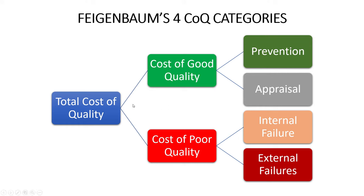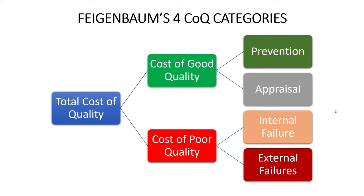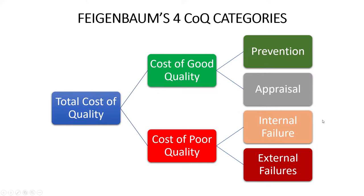He posed a question you can ask yourself to help categorize any cost or activity into one of these four buckets — essentially the 'right the first time' perspective. Ask yourself: if we built 100% conforming product, would that cost still be there? If you built non-conforming product and incurred costs like rework or customer complaints, that's cost of poor quality. If the cost would still be there — like testing or auditing — that's cost of good quality.